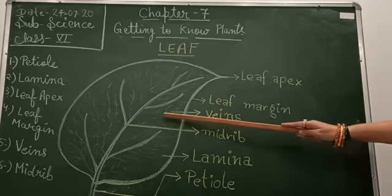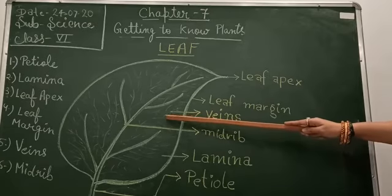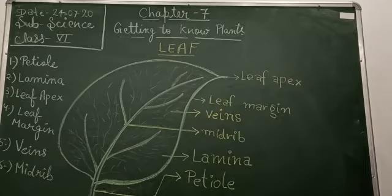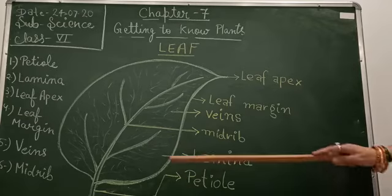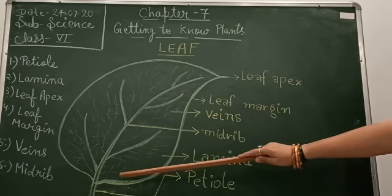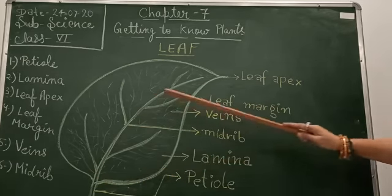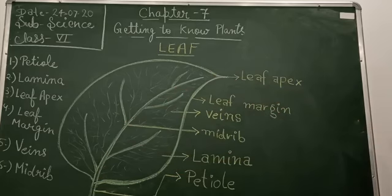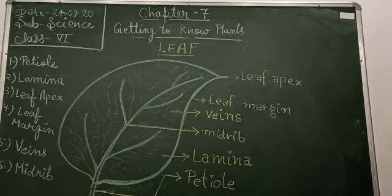Veins are narrow vessels which transport water and nutrients to the leaf. Midrib. It is the thick vein in the middle which runs from the base of the leaf to its tip. The midrib and the veins act as the skeletal framework of the leaf.